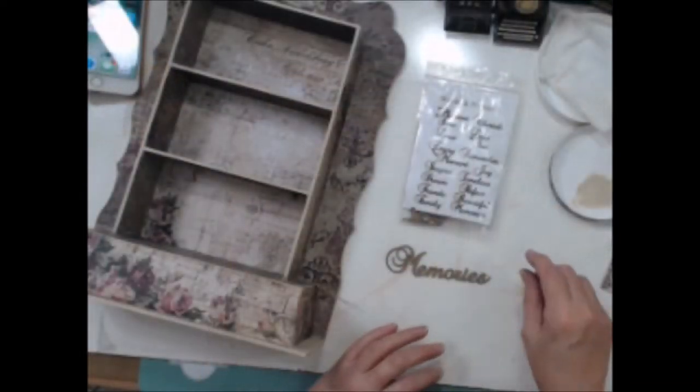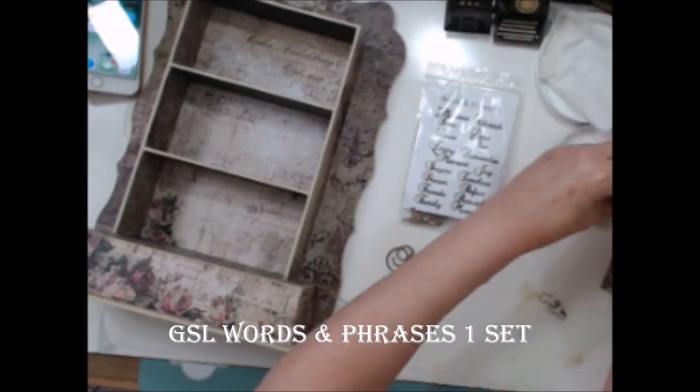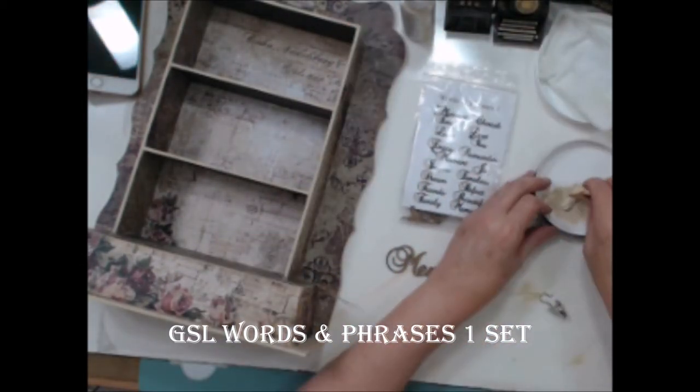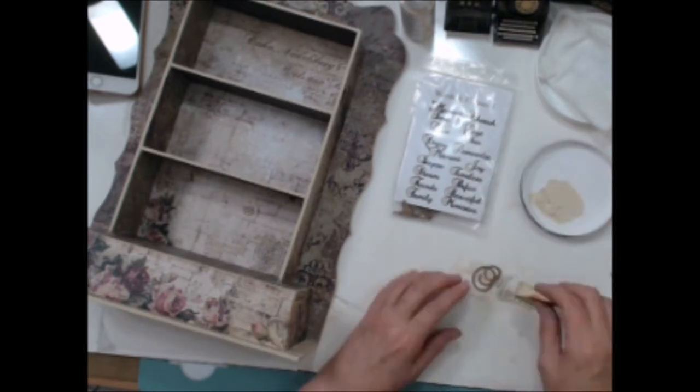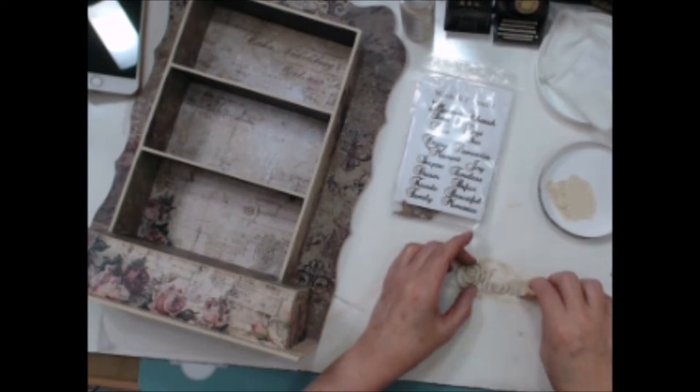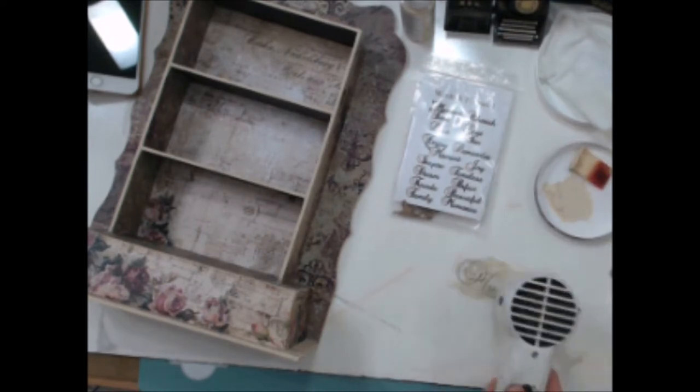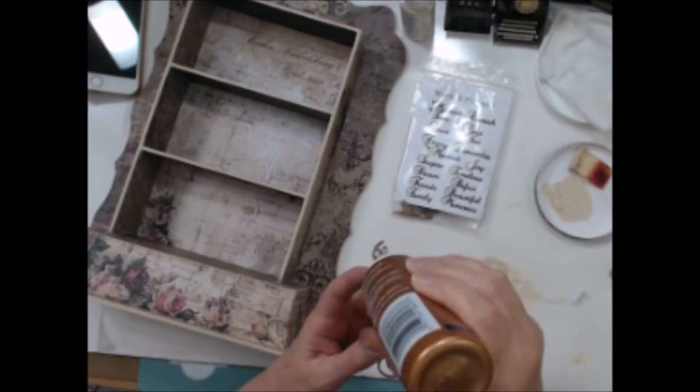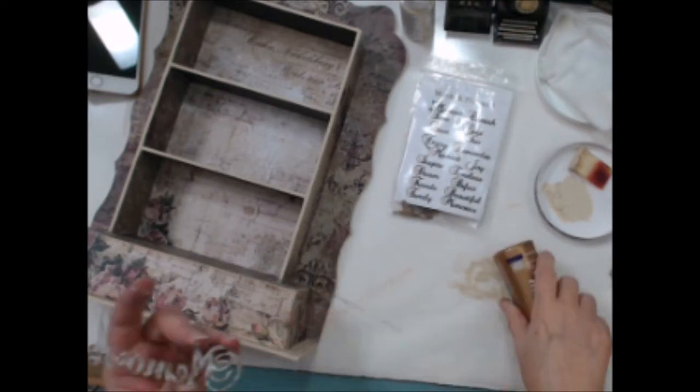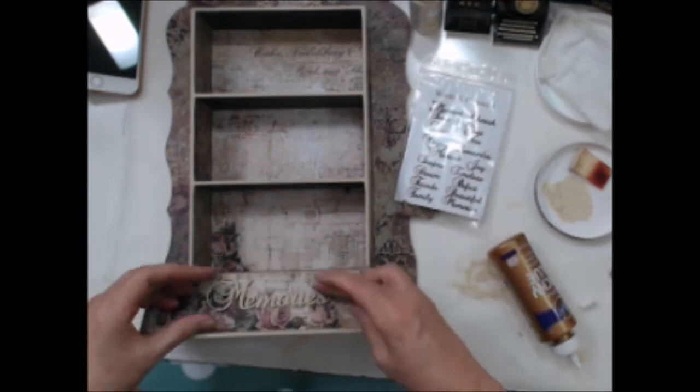For the bottom of the display, I chose Memories from the Words and Phrases number 1 set. And I painted it with the Timeless chalk paint and a makeup sponge. After it dried, I glued it to the bottom, centering it in the space.